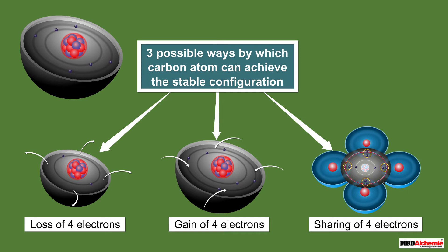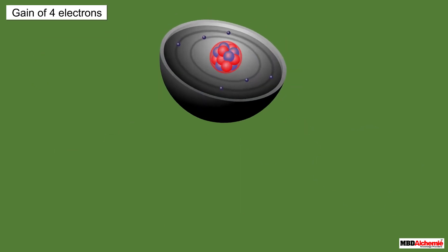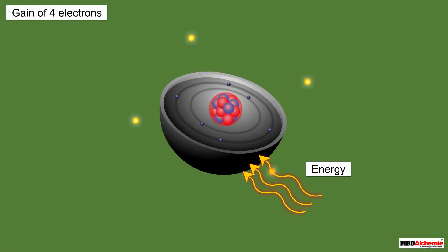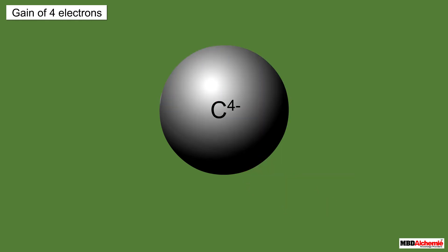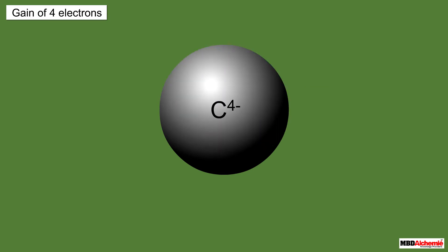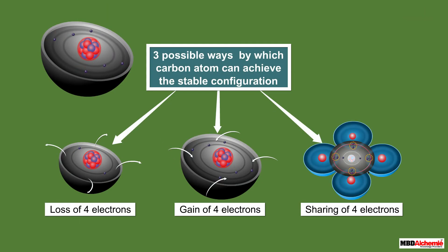The next possibility is the gain of four electrons. Forcing four electrons into the valence shell of a carbon atom also requires a lot of energy. Further, this would lead to the formation of an anion with six protons and ten electrons. It would be very difficult for six protons to hold ten electrons, making the anion very unstable. Therefore, the gain of electrons would also not be favored.